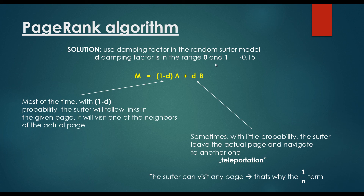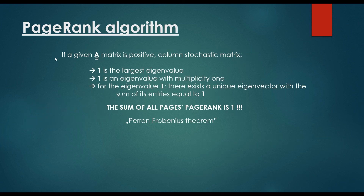This is why we need the damping factor. If the damping factor is 0.5, it means there is a 50% chance the surfer will follow links within the website and a 50% chance the surfer will make a teleportation. Usually this damping factor is small, approximately 0.15.